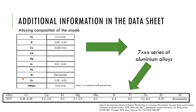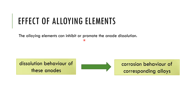A typical aluminum anode consists of zinc as one of its major alloying elements. This composition is similar to the composition of the aluminum alloys from the 7000 series. An example of this is the 7075 alloy, where the zinc content is within the limits of the aluminum anode as well. The anode in a CP system works when it has an efficient dissolution behavior, which corresponds to the current output.